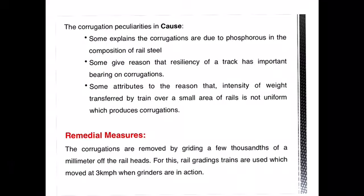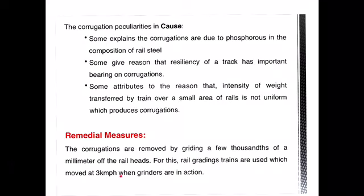The remedial measure to overcome corrugations: since corrugations occur on the head portion of the rail section, they are removed by grinding approximately two centimeters of the rail head. This grinding is done with the help of a special grinding train, which has the capability of moving at a speed of three kilometers per hour. When the grinding is in action, it removes the corrugated portion of the rail.